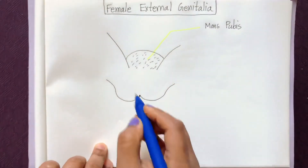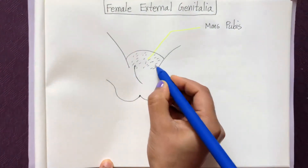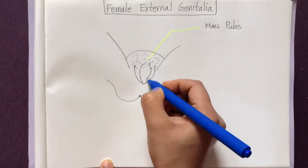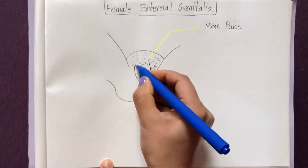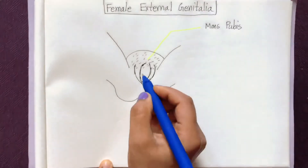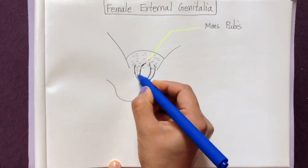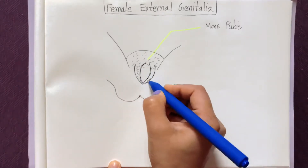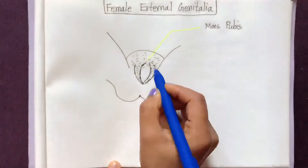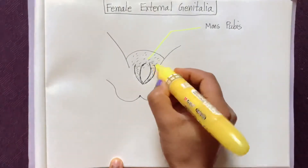Just below the mons pubis, two lip-like structures are present. These are called labia majora — 'labia' means lip and 'majora' means big. They also contain fat and hair follicles or pubic hair. Labia majora are fleshy folds of tissue.